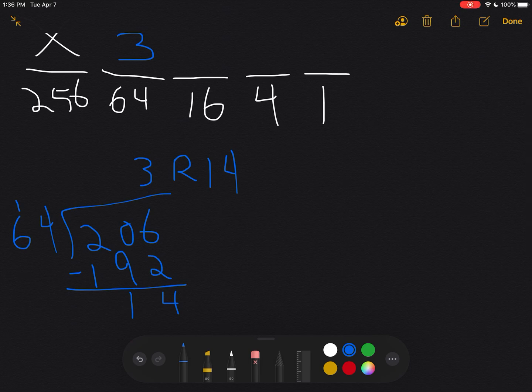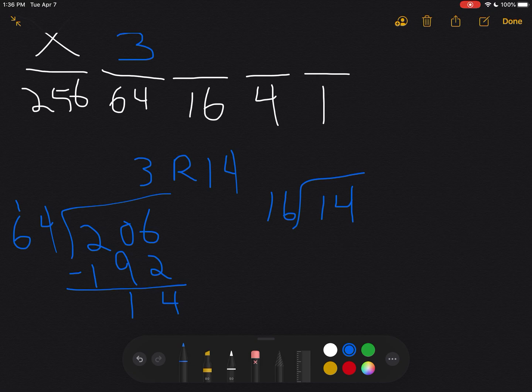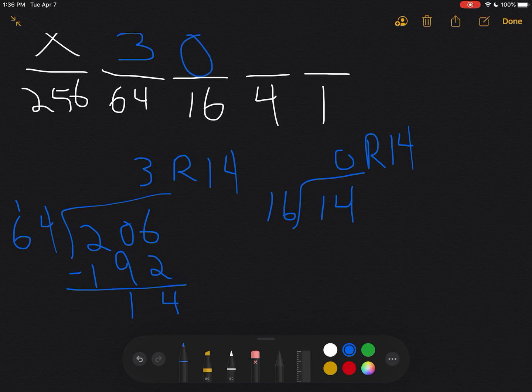So I'm going to take that 14 and keep going. I want to know how many 16s are in 14. Well, you already know there aren't any 16s in 14, so I don't need any of those. I'm going to put a zero there.